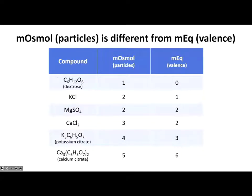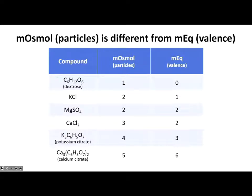Potassium chloride dissociates into one potassium and one chloride — so two particles. Does that mean the valence is two? No — they balance each other out. Potassium has a charge of plus one, so one ion times a valence of one equals one milliequivalent. So for KCl: two particles but one milliequivalent.